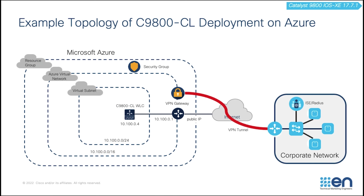Here is the example topology of Catalyst 1900 CL deployment on Azure. A resource group is created that contains all the resources for this deployment. A virtual network and a subnet is created for the VM to be attached. A network security group is created to give inbound rules and outbound rules for the VM. A management VPN is created for traffic transmitted between the Azure virtual network and the corporate network. Finally, a Catalyst 1900 CL is created in the virtual subnet for managing the APs in the corporate network through the management VPN.